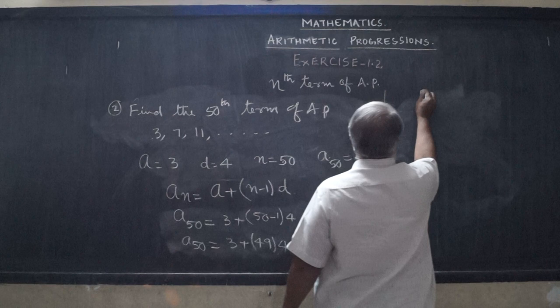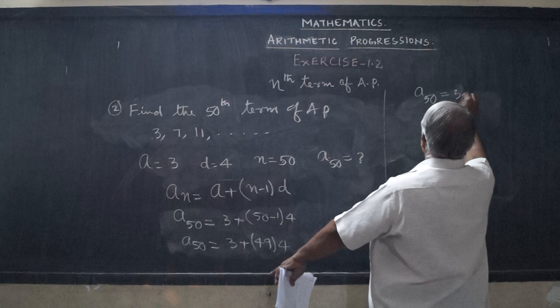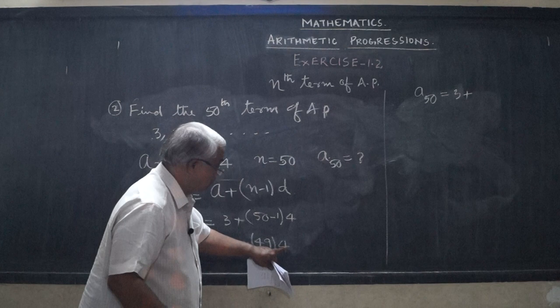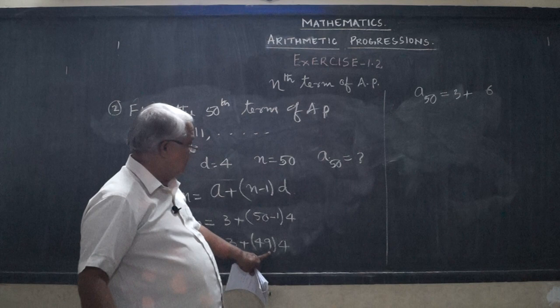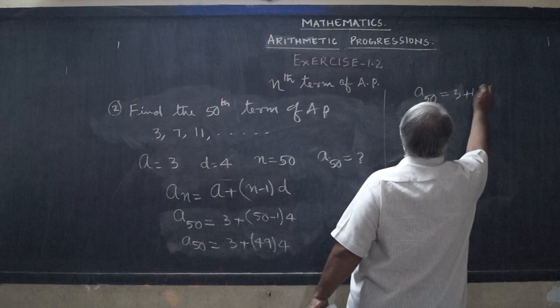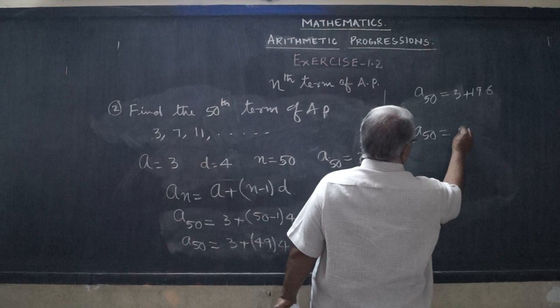Now we calculate 49 multiplied by 4: 9 times 4 is 36, carry 3; 4 times 4 is 16, plus 3 is 19. So 49 × 4 = 196. Therefore a_50 = 3 + 196 = 199. The 50th term of the AP is 199.